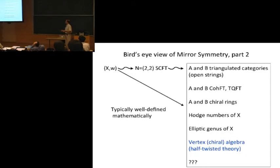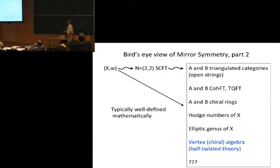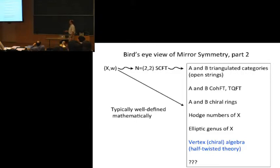N equals 2 superconformal field theories are understood well enough so that some parts are very well axiomatized. For example, you're expected to get A and B triangulated categories corresponding to open strings. There are A and B topological conformal field theories, cohomological field theories, and A and B chiral rings corresponding maybe to a sphere with three punctures. There are also rougher invariants such as Hodge numbers and elliptic genus of X. And there are more yet to be discovered.